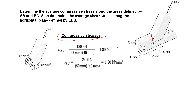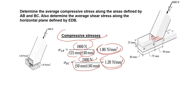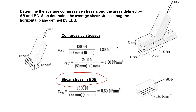The compressive stress in the AB plane is force FAB divided by the AB area, and in the BC plane it is force FBC divided by the BC area — both are compressive. For the shear stress in plane ADB: the shear force is 1800 N over an area of 75 × 40 mm, giving a shear stress of 0.6 N/mm².